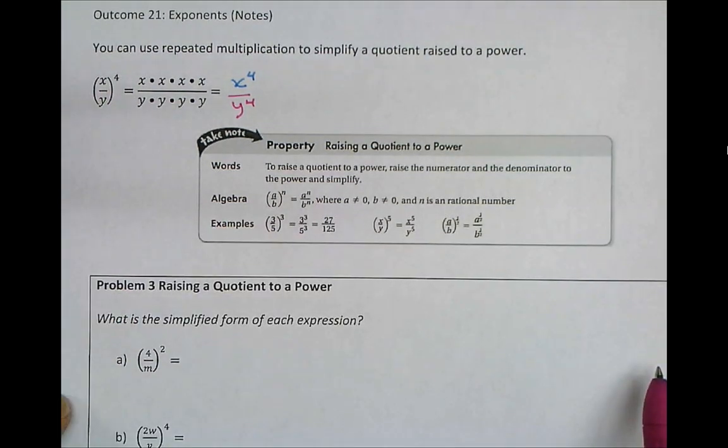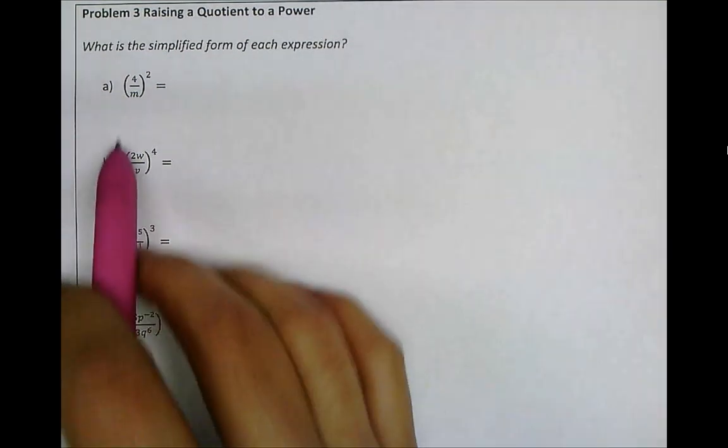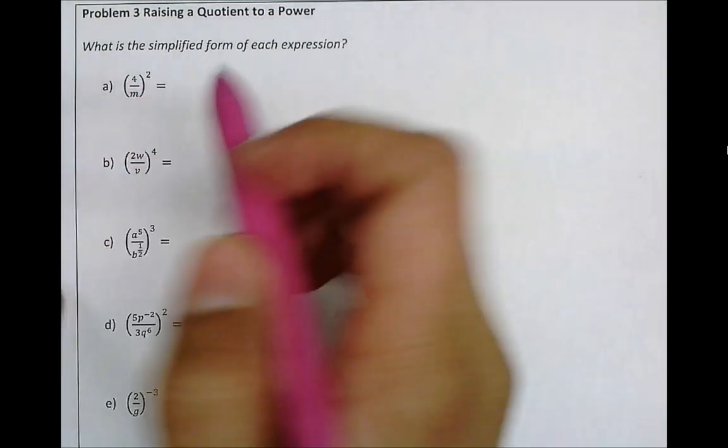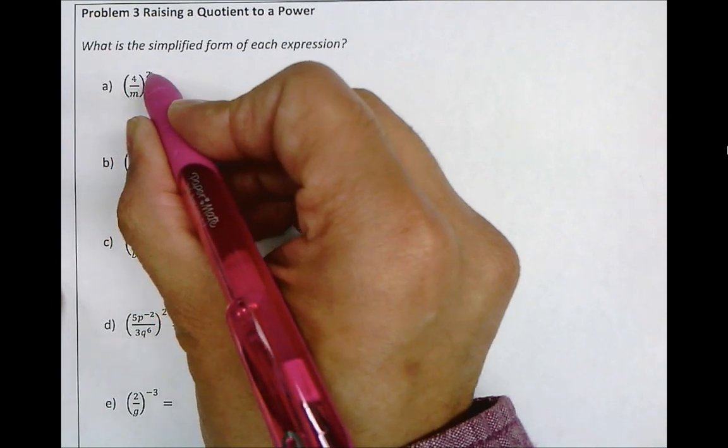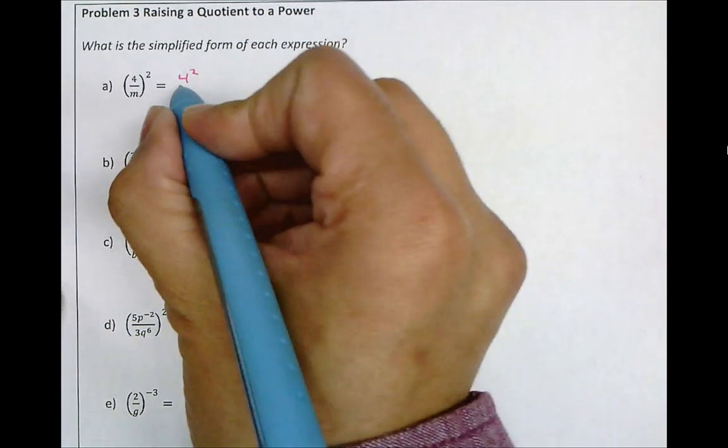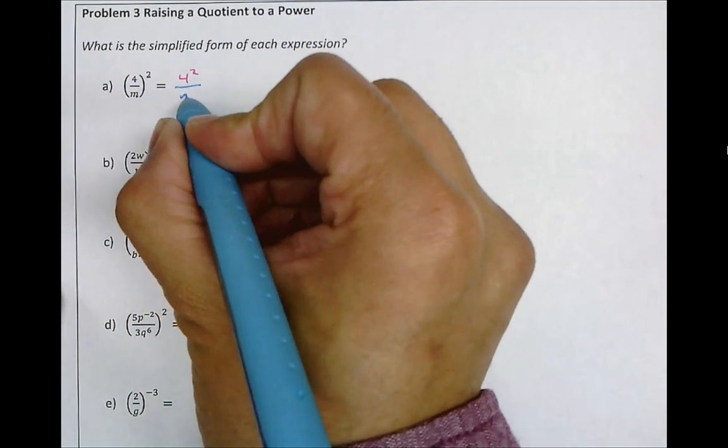Now let's take a look at a few examples. In part a here, we have 4 divided by m to the power of 2. So that is 4 to the power of 2 over m to the power of 2.